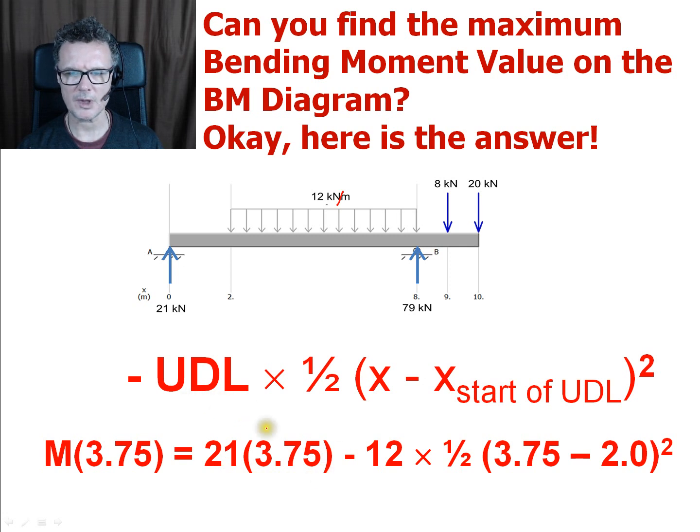And the second term I just use my formula so I've got minus 12, so minus UDL times by half. We know the location of where the maximum is going to be which should be at 3.75, so 3.75 take away start position which is 2, square all that.